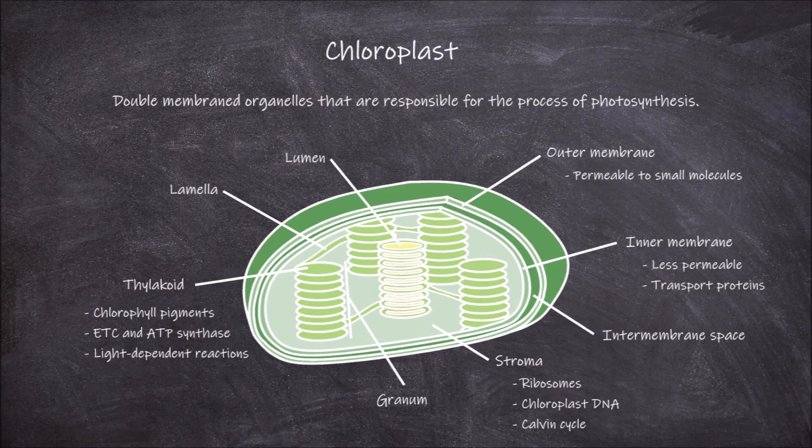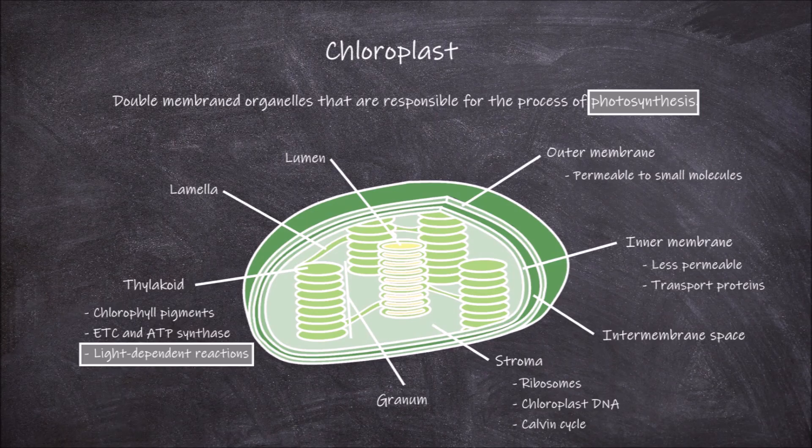The main function of the chloroplast is in the process of photosynthesis. Photosynthesis occurs in two steps: the light-dependent reactions, which as already mentioned, occur in the thylakoid membranes, and the light-independent reactions, which is the Calvin cycle that occurs in the stroma of the chloroplast.